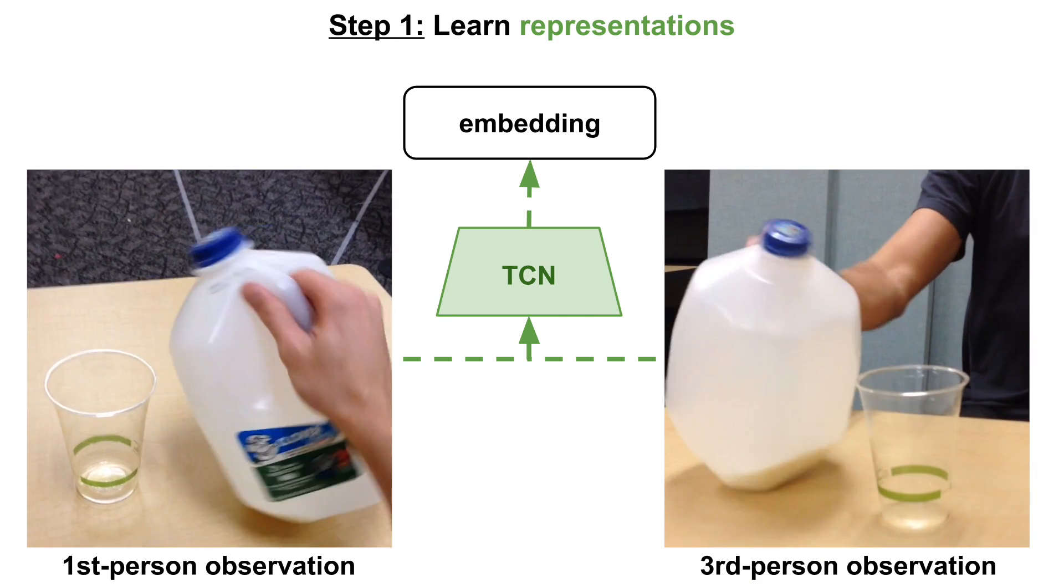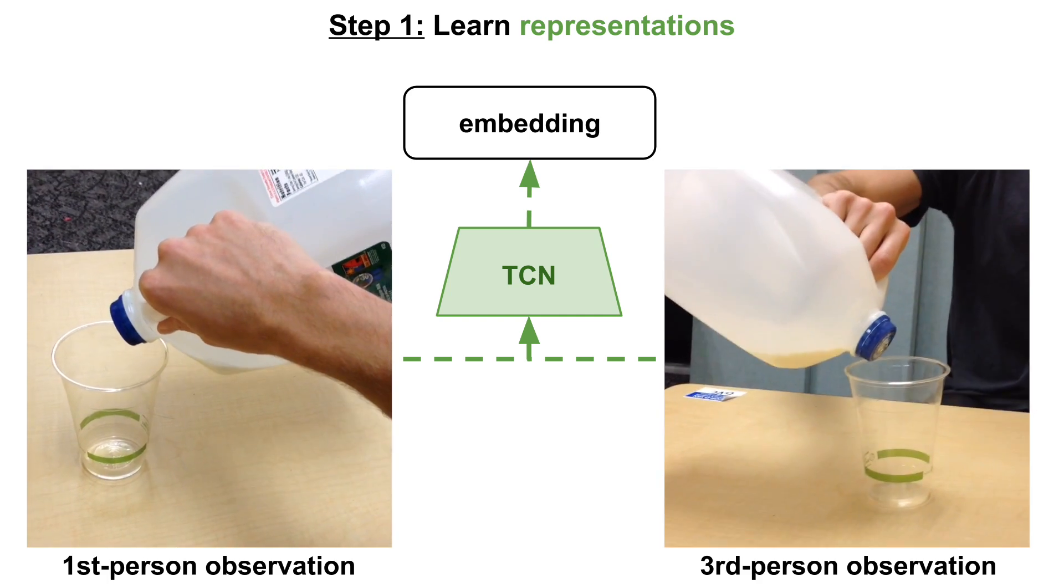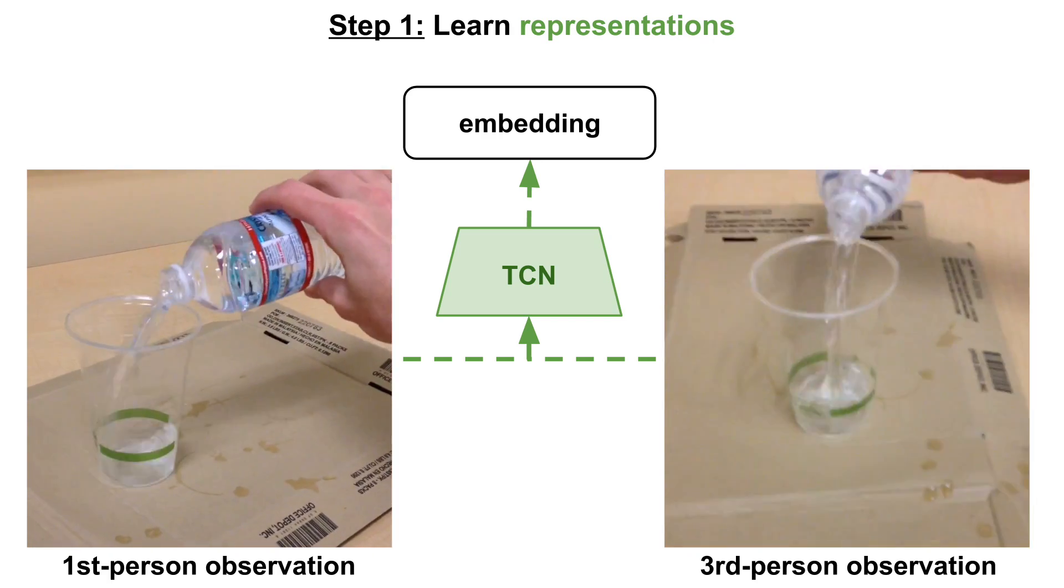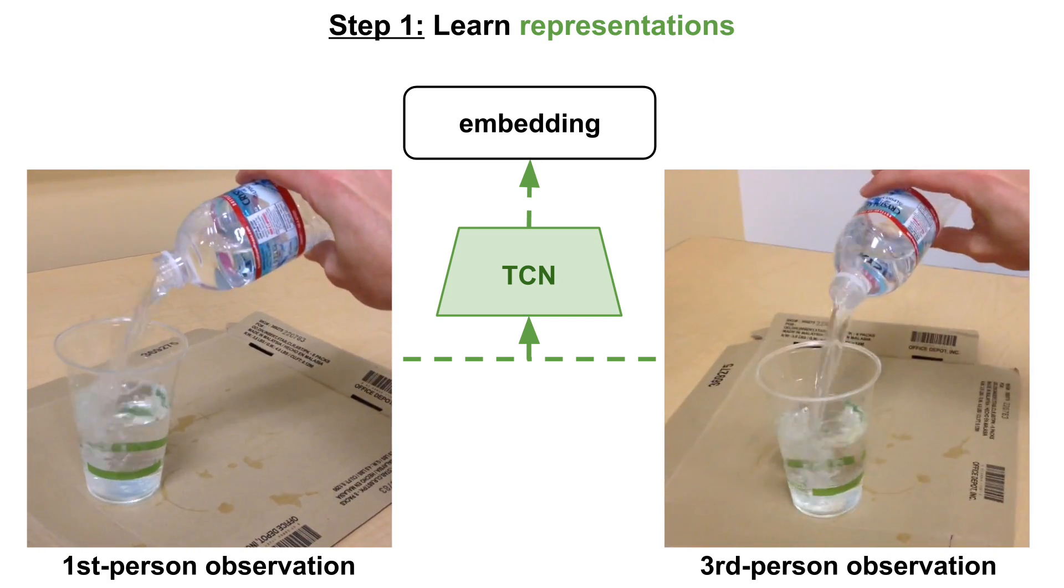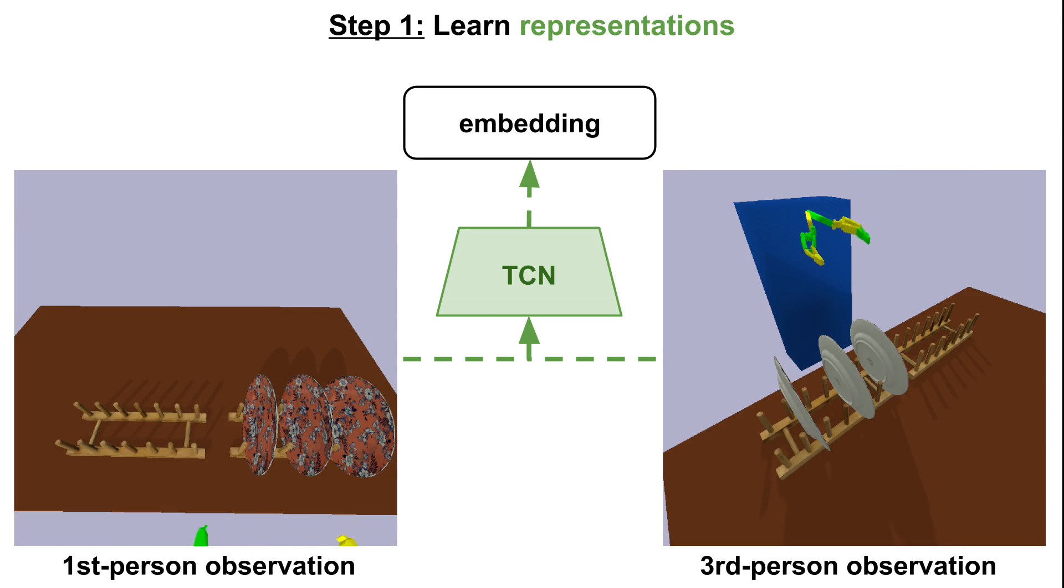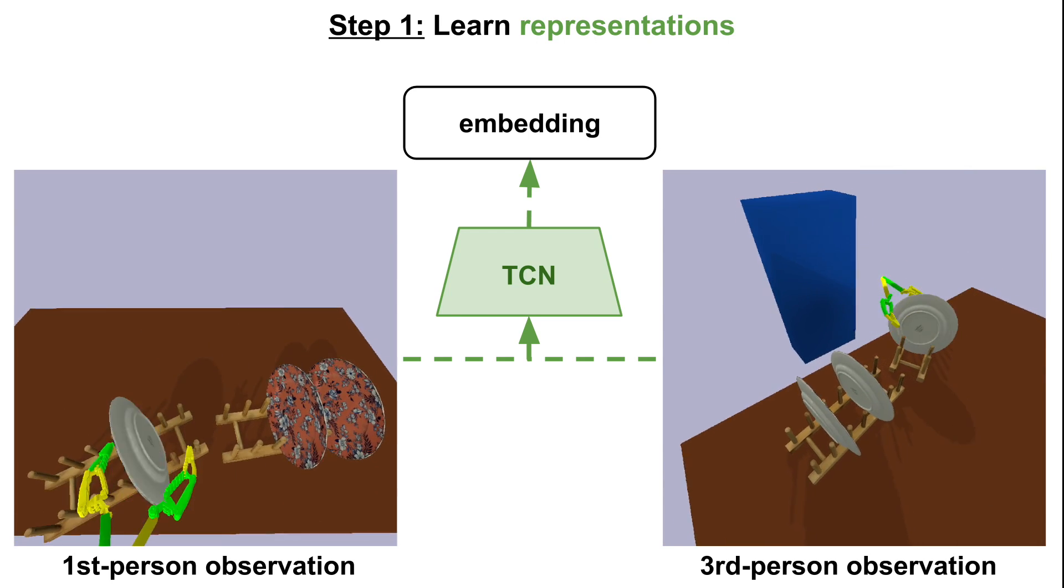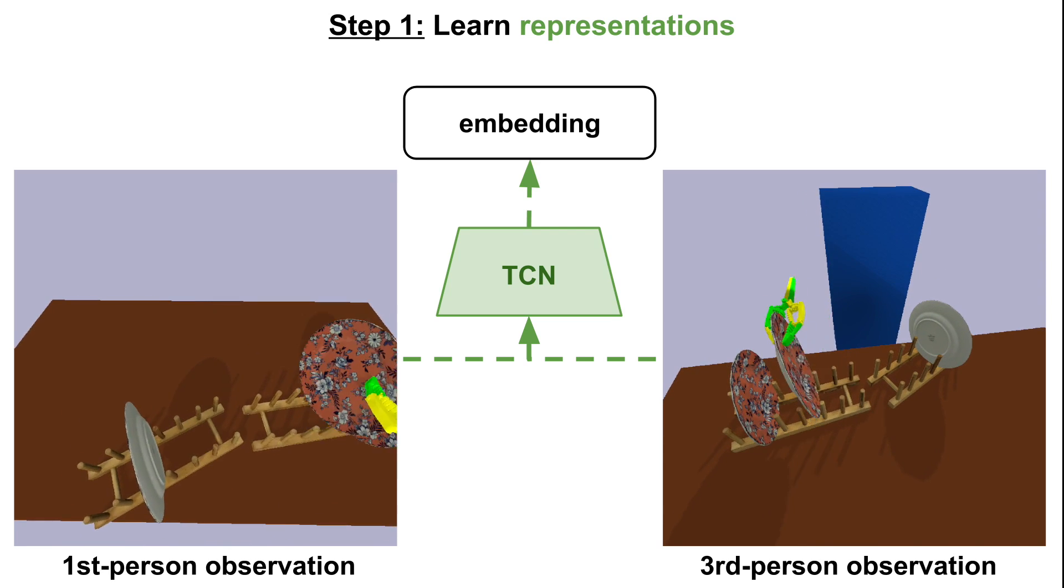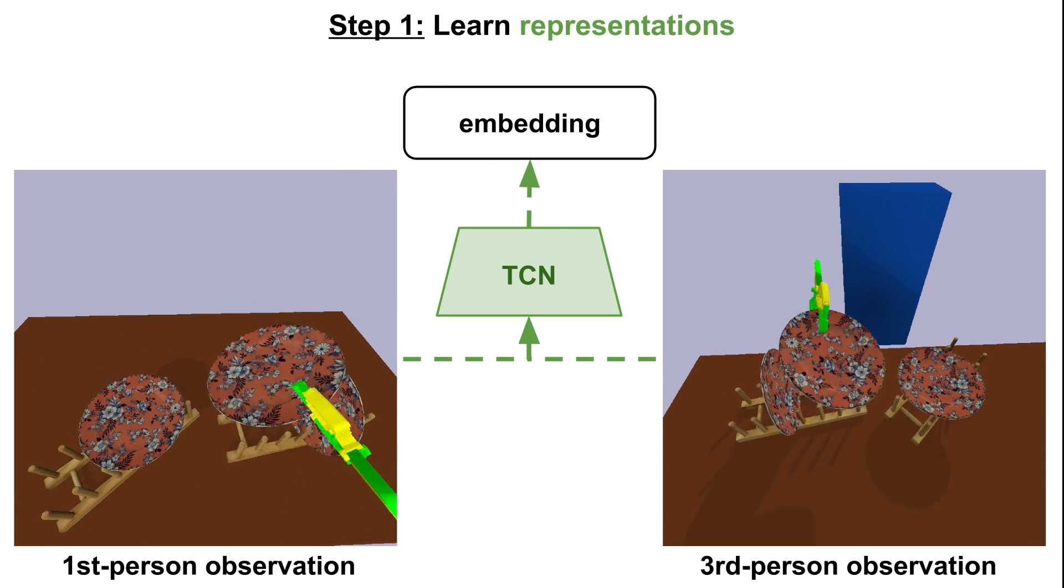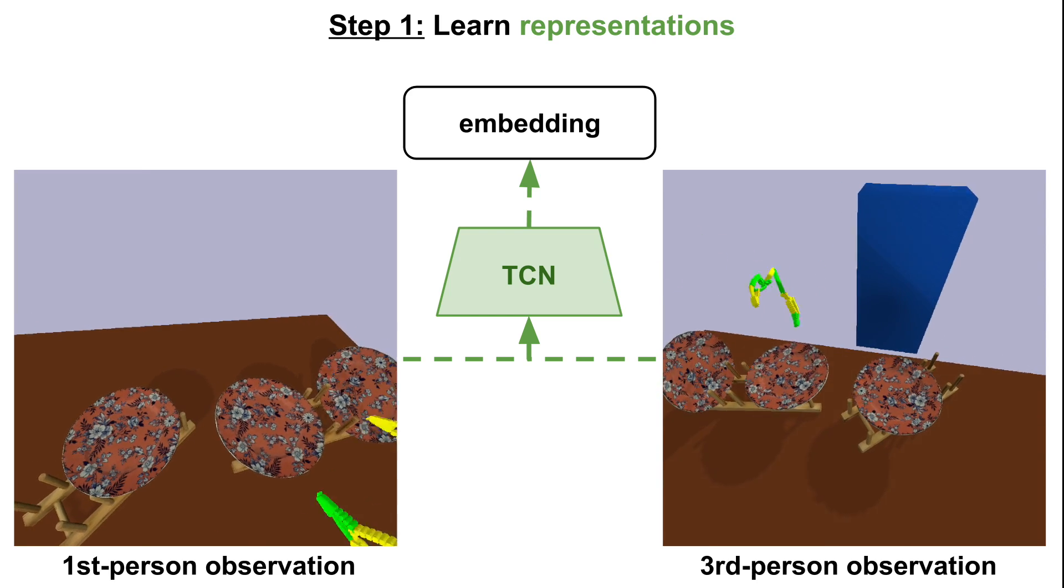The first step of our approach is to learn disentangled representations from video using time as a supervision signal. In particular, we use multiple synchronized viewpoints of the same scene as a rich signal for discovering different attributes in the world. This embedding is trained with an unstructured and unlabeled collection of videos. These contain positive demonstrations of the task, but also random interactions to cover a general set of possible states in the world.